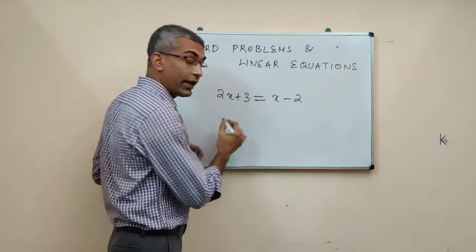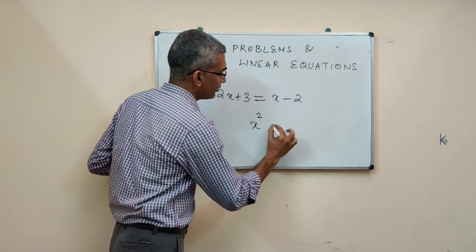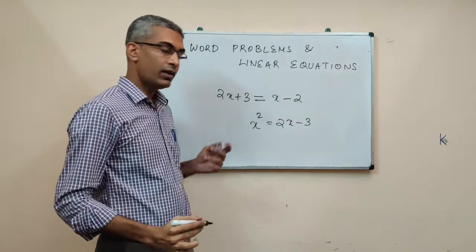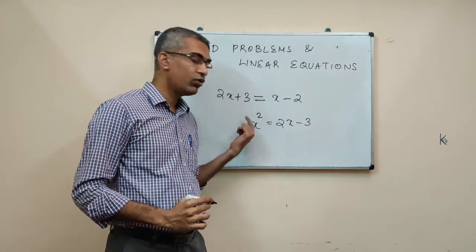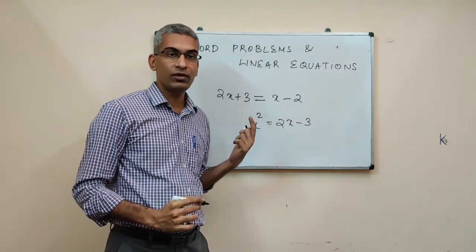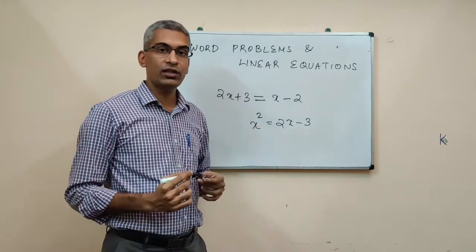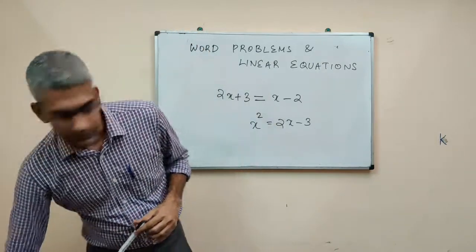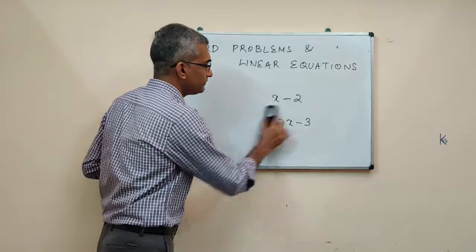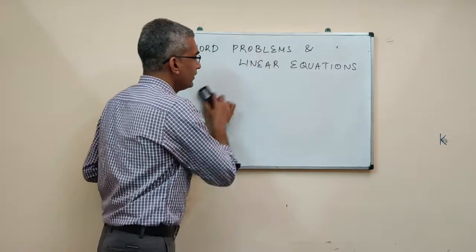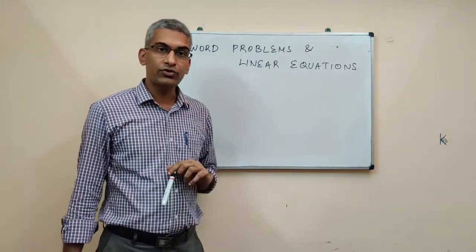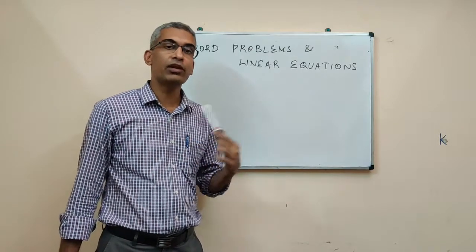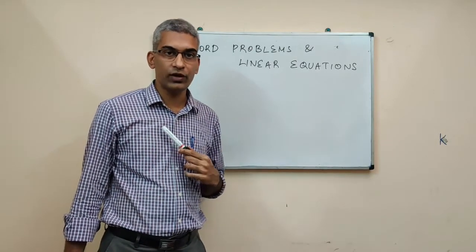In contrast, a quadratic equation will have something like x squared equals 2x minus 3, where the highest power of the unknown variable is 2. Whereas in a linear equation, the highest power of the unknown variable will be 1. In simple linear equation problems we will have only one variable to work with. In a little more difficult one, we might have multiple variables to work with.